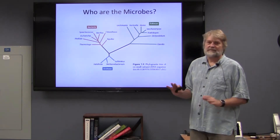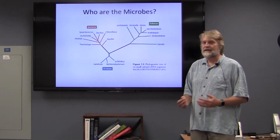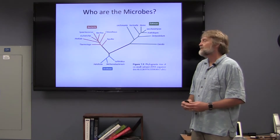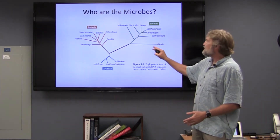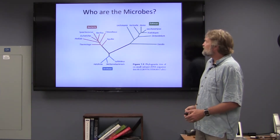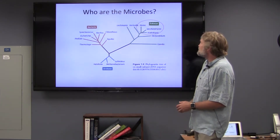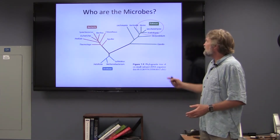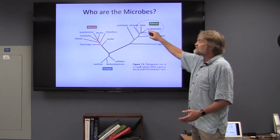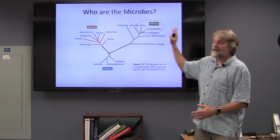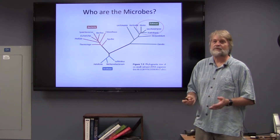This is the Tree of Life. It's based on the 16S ribosome sequence. Any organism that has a ribosome — and these are all the free-living organisms on Earth — is represented on this tree. Just to orient you, we're up here on the tip of this little tree. These are the eukaryotes: we've got the animals, the plants, and the fungi. Everything else on this tree are the microbes, and these are what we study.